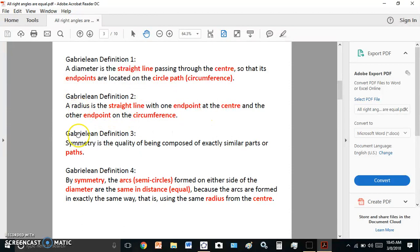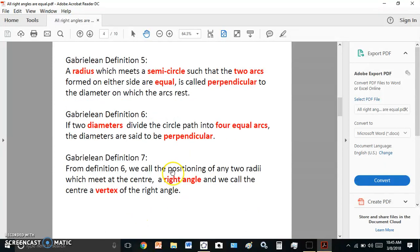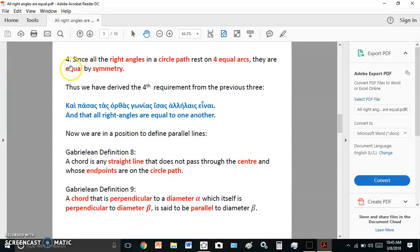I basically define a diameter, and you can read that up in your own good time. And then I define a radius, and then I define what symmetry means. It's the quality of being composed of exactly similar parts or paths. This is very important, symmetry. And then by symmetry, we define arcs or semicircles formed on either side of the diameter. And then we move to definition 5, which says a radius meets a semicircle such that the two arcs on either side are equal. If it does that, then it's perpendicular to the diameter on which the arcs rest. So you have to read these very slowly and carefully.